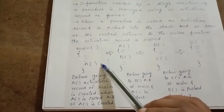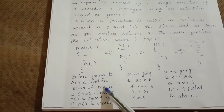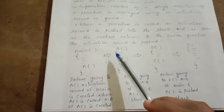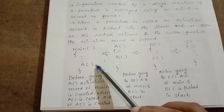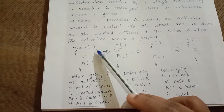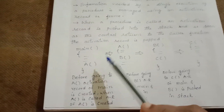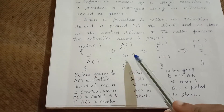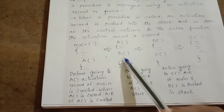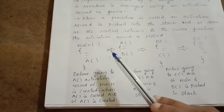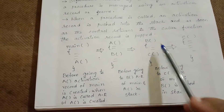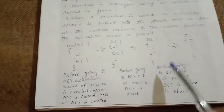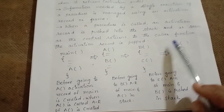For example, consider the main function. Before going to A, the activation record of main is created. When A is called, the activation record of A is created and pushed onto the stack. Then B is called, so activation records of main and A are already in the stack, and B is pushed. Before going to C, activation records of main, A, and B are in the stack, and C is pushed.